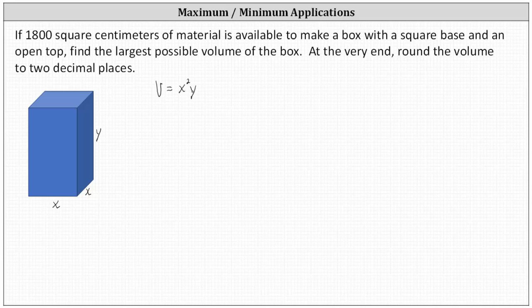We have the constraint that 1,800 square centimeters of material is available. And remember, this is an open top box, and therefore there is no top. This indicates the remaining surface area must be a maximum of 1,800 square centimeters, and we'll assume we will use all the material.